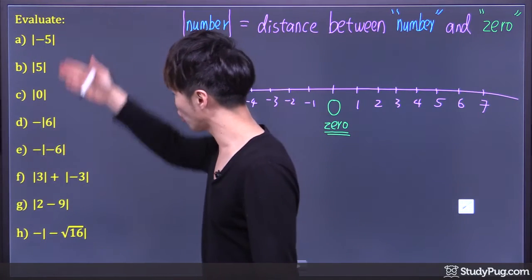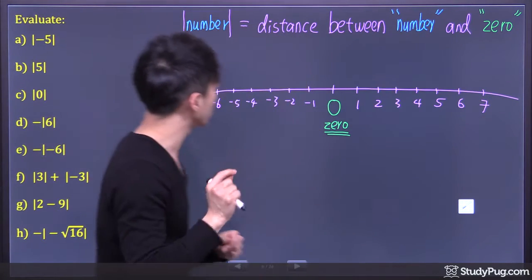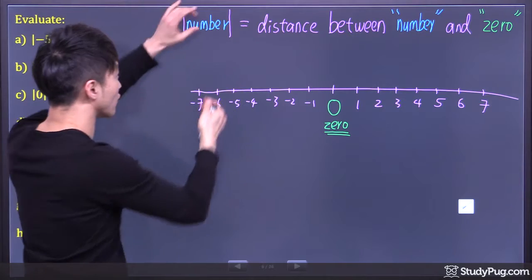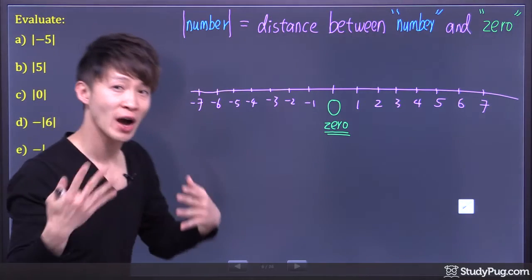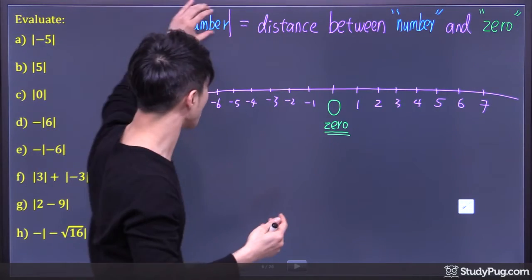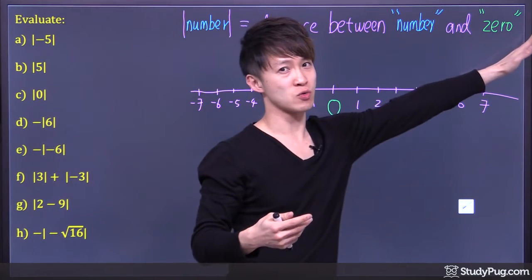Evaluate the absolute value of these numbers. Quick review: absolute value of a number is defined as the distance between the number itself and 0.